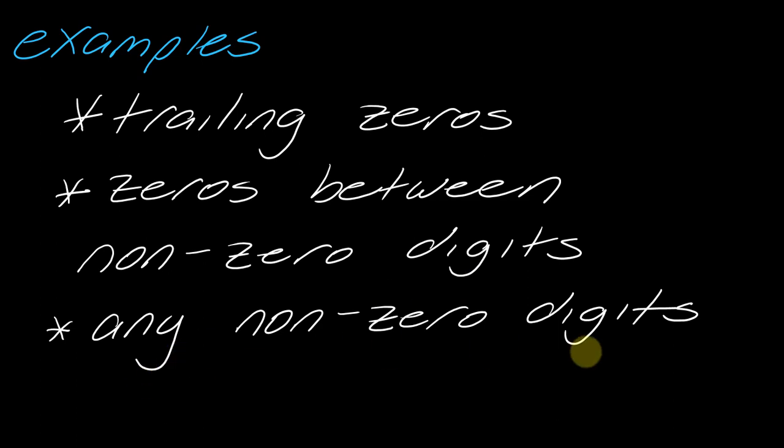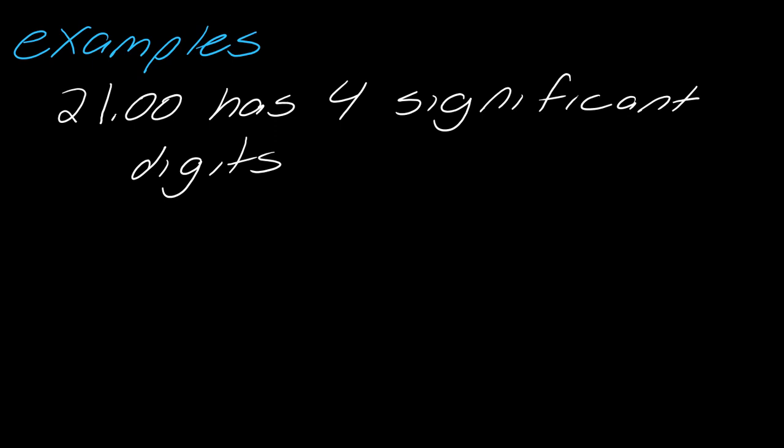This can mess with your head a little bit, so I want to show you some examples. Starting with 21.00 - trailing zeros count. This would be one, two, three, four significant digits, because we actually went out and called out that .00.